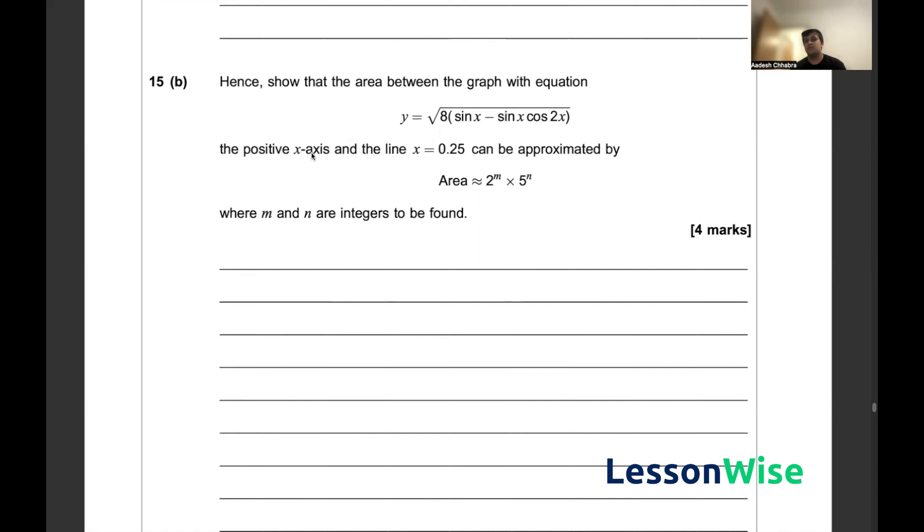Between the positive x-axis and the line x equals 0.25 can be approximated by area approximately equal to 2 to the power m times 5 to the power n where m and n are integers to be found.